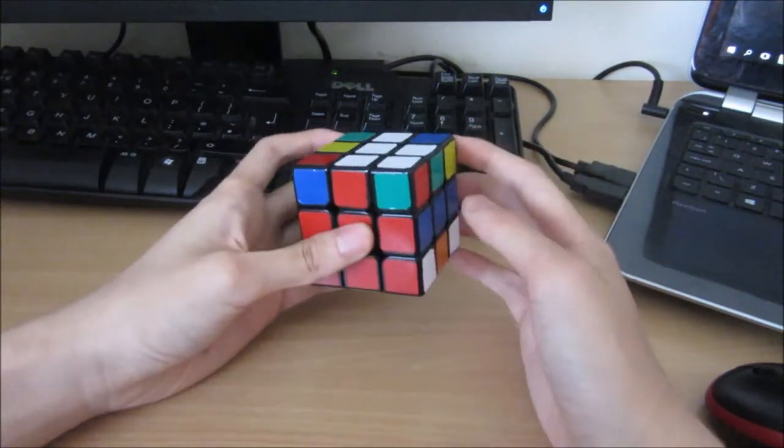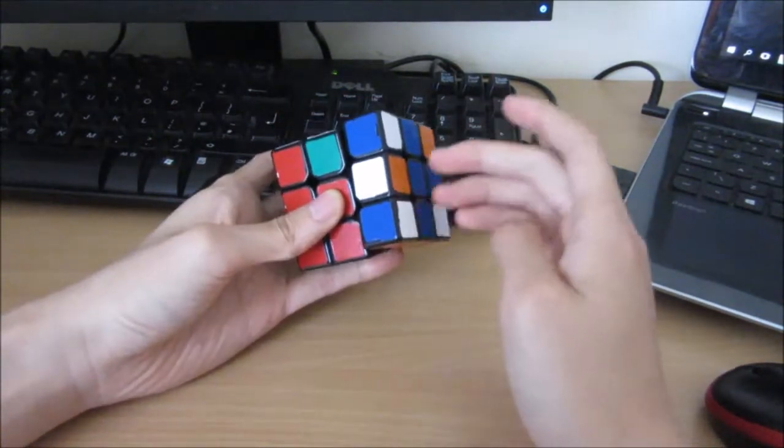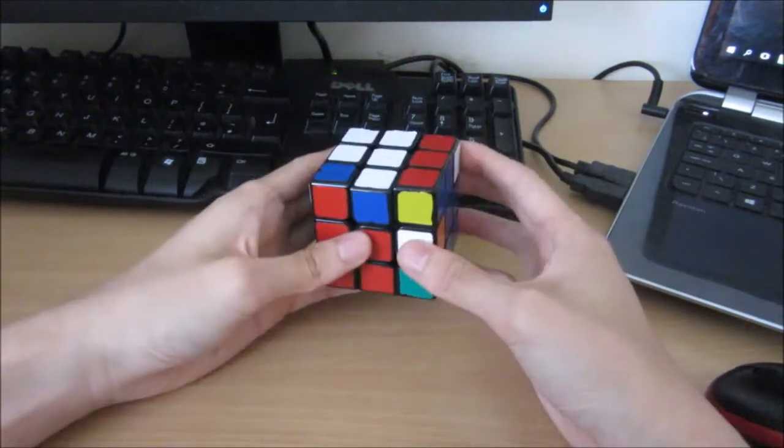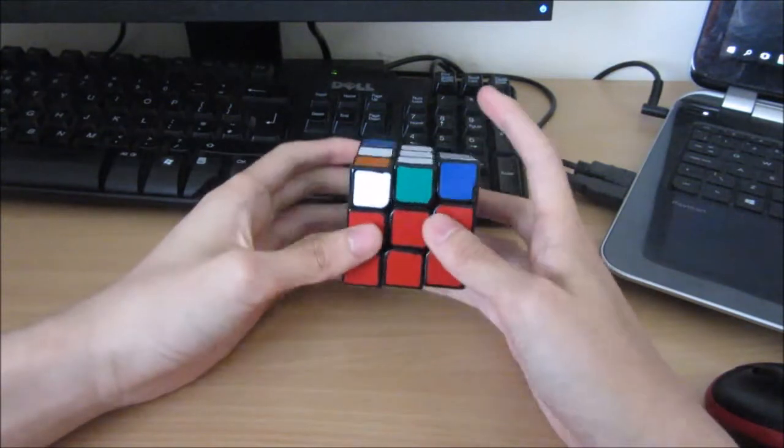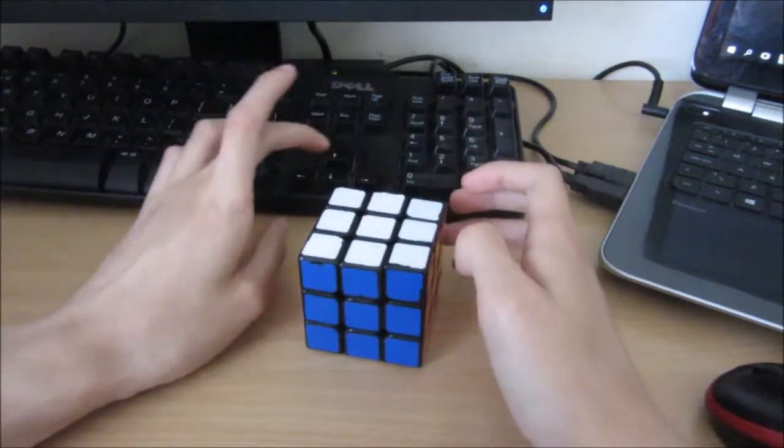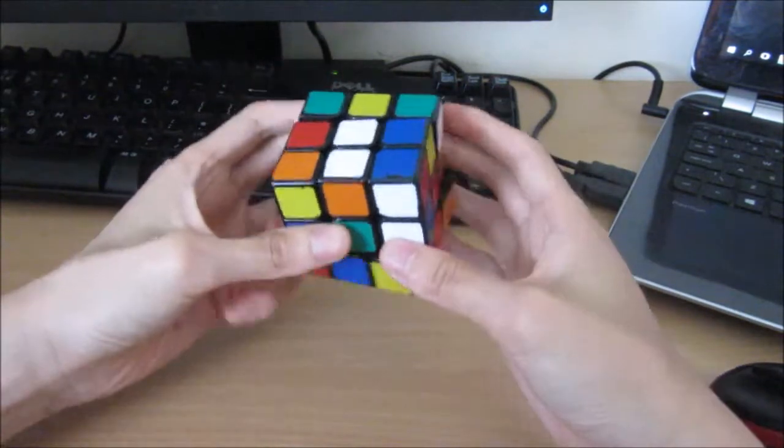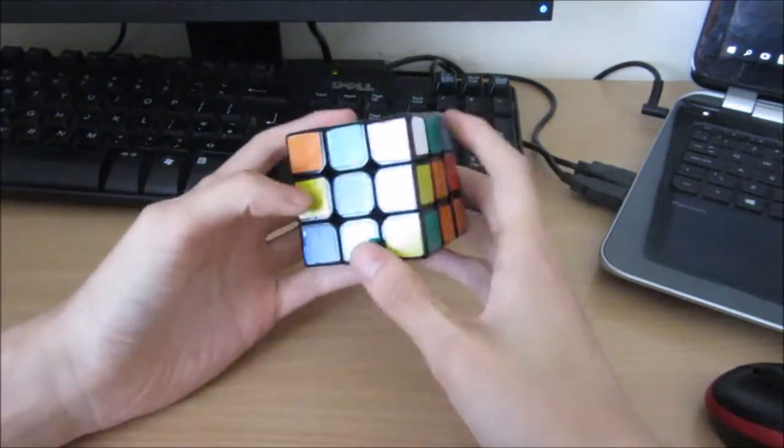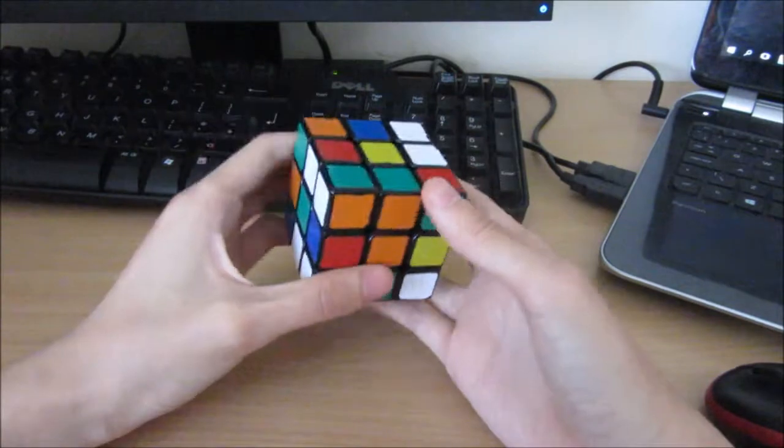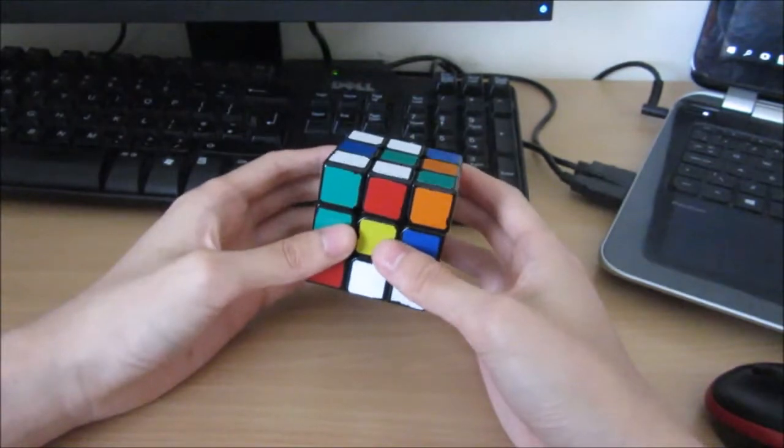This case, I would probably do something like this. So I pair these up first. And then my edge is on the bottom, so it's sort of like an F-2L pair. Just do that. Last pair. Then I can do C-O-L. And I get an E-P-L.